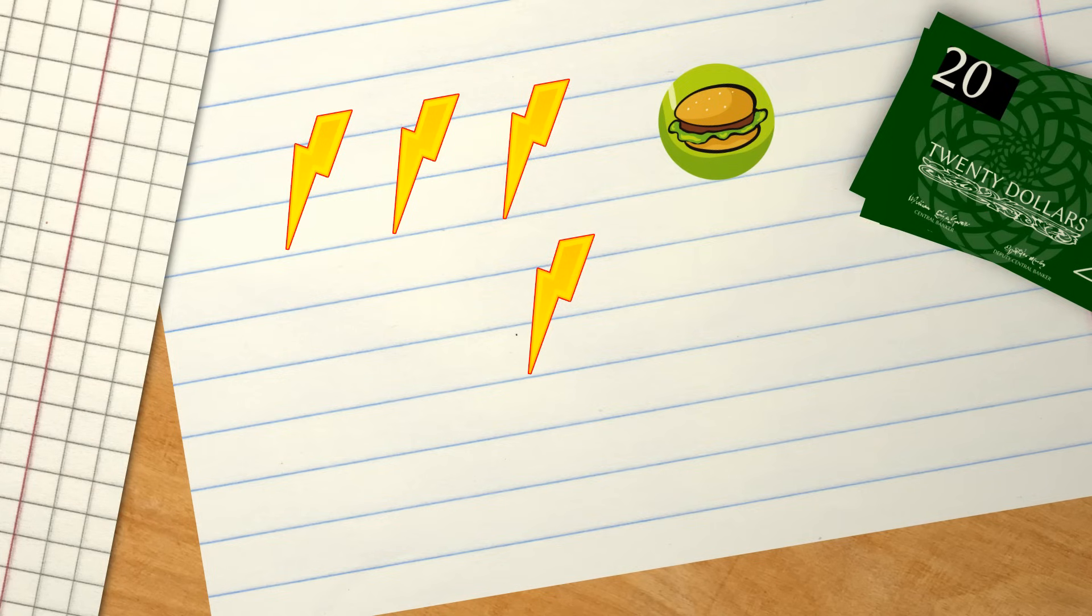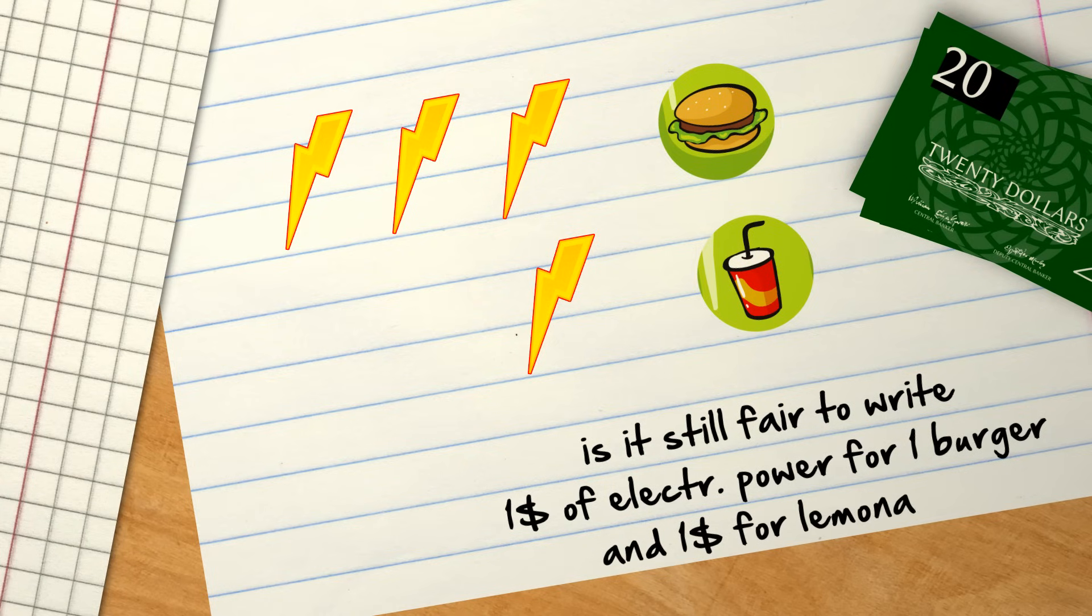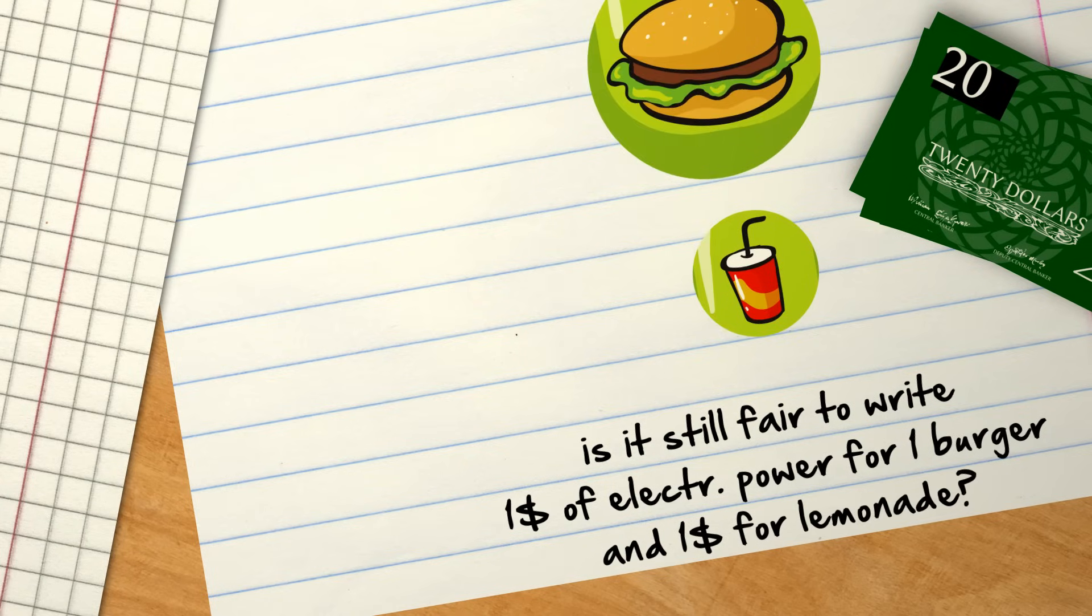But what if you use 3 kWh of electric power to make one burger but only 1 kWh of electric power to make a glass of lemonade? Is it still fair to write down $1 of electric power for one burger and $1 of electric power for one lemonade? We should write down a bigger electric power cost for the burger, right?